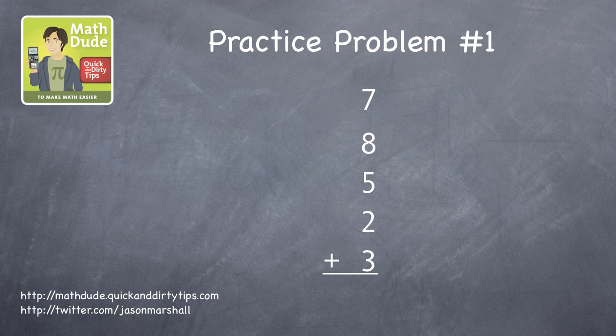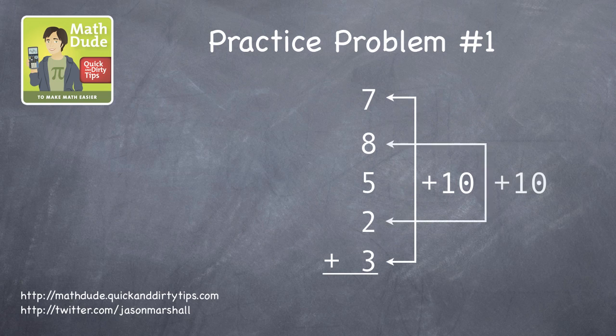So instead of adding from top to the bottom, one by one, look for pairs of numbers that add to 10. 7 and 3 is 10, 8 and 2 is 10, so the problem is really just 10 plus 10 plus 5, which is 25.